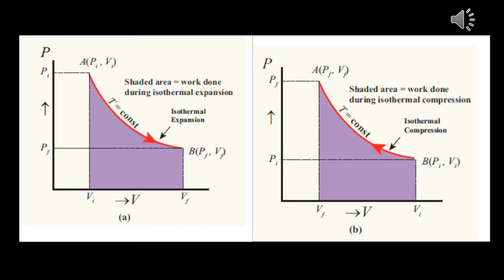The work done in isothermal compression and isothermal expansion can also be found using a PV diagram. The isotherms are drawn for both cases, and the area under the isotherm — shown as the shaded violet region — gives the work done in the process.